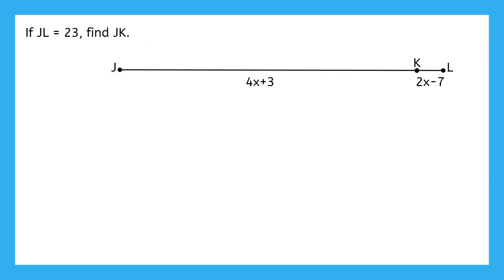Here's an example that uses the segment addition postulate. It says, if JL equals 23, find JK. As you can see in this picture, we already have an expression that represents JK. But when the directions say to find JK, we're wanting to find an actual distance or measurement for the length.